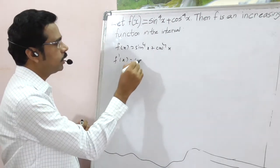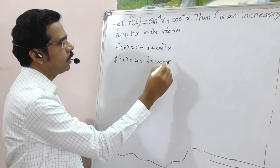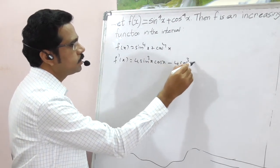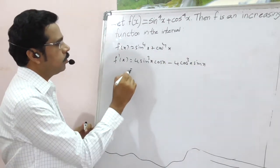Sin power 4, that is 4sin³x cos x. Here, minus 4cos³x sin x. Why? Because here, differentiation of cos x is minus sin x.